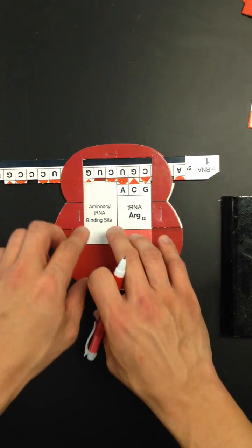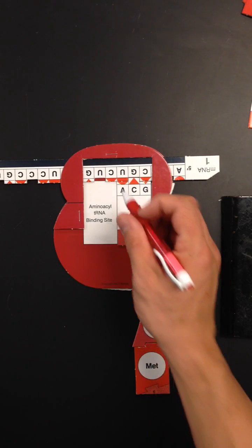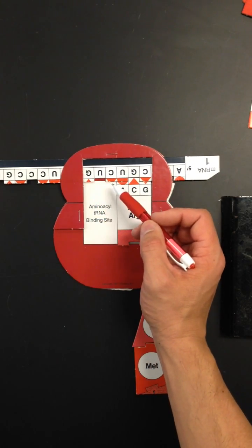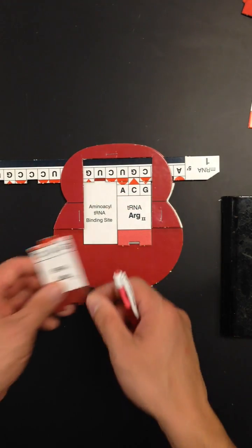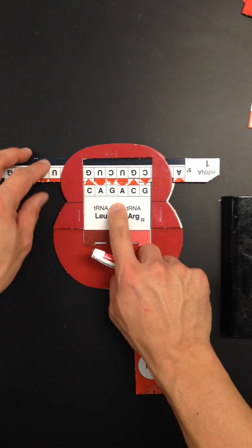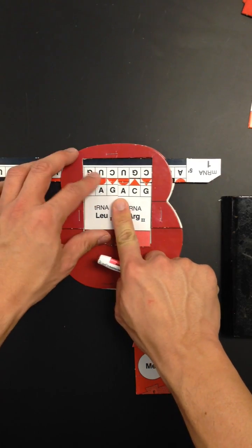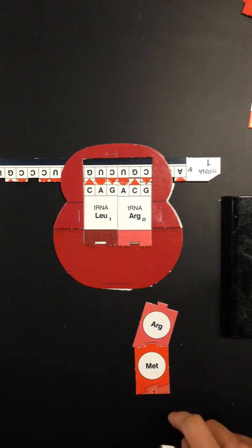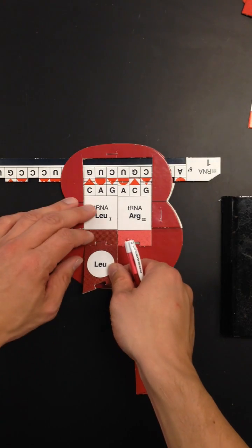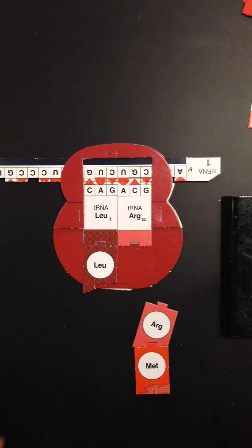Once I have my codon up here, I'm going to look for my anticodon on the transfer RNA. Since I have CUG, I'm going to have to find the anticodon GAC. And here it is. Let's snap that in there. And then I'm going to transfer with that the amino acid that is carried by that transfer RNA.